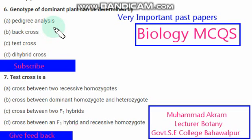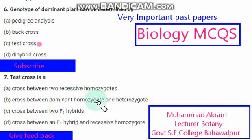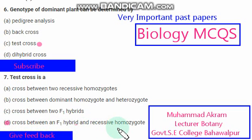Pedigree analysis, back cross, test cross, or dihybrid cross? The right option is option C, test cross. Test cross is — the right option among these is option D — a cross between an F1 hybrid and a recessive homozygote.